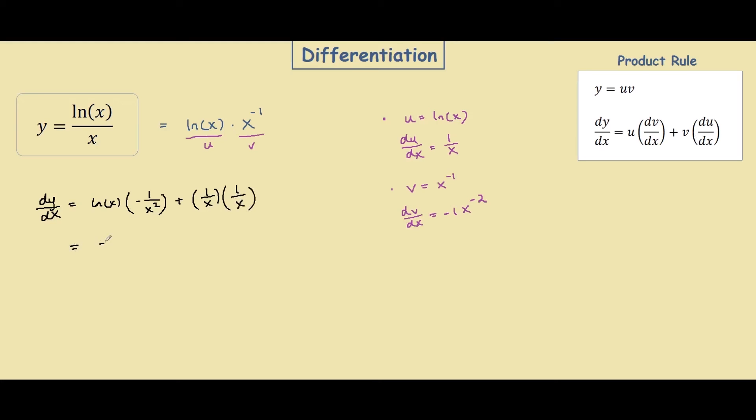Simplifying this down, we have negative ln of x over x squared plus 1 over x squared. And joining the two fractions together, we have 1 minus ln of x all over x squared, and this is your answer.